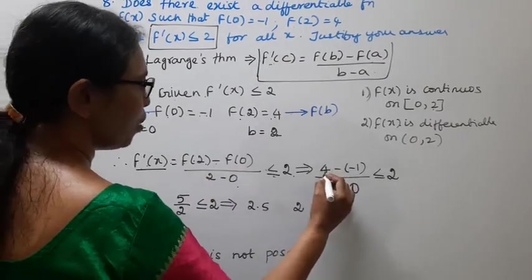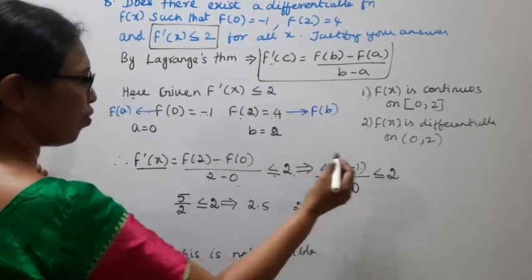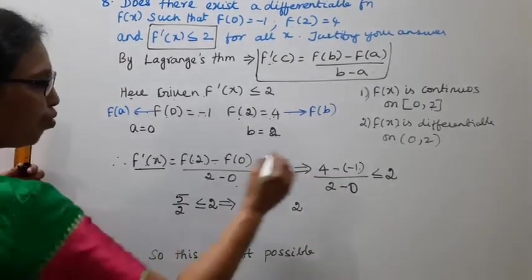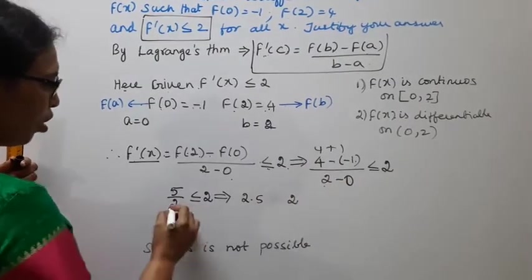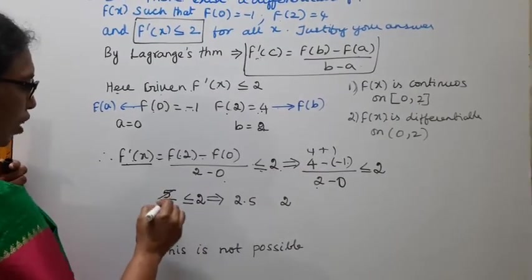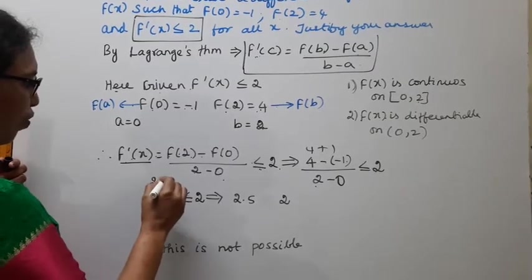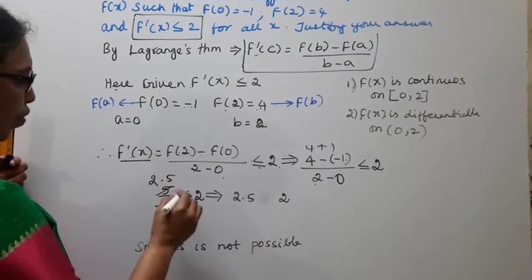So 4 minus (-1) equals 4 + 1 = 5, divided by 2. 2 - 0 = 2. After canceling, we get 5/2 = 2.5.